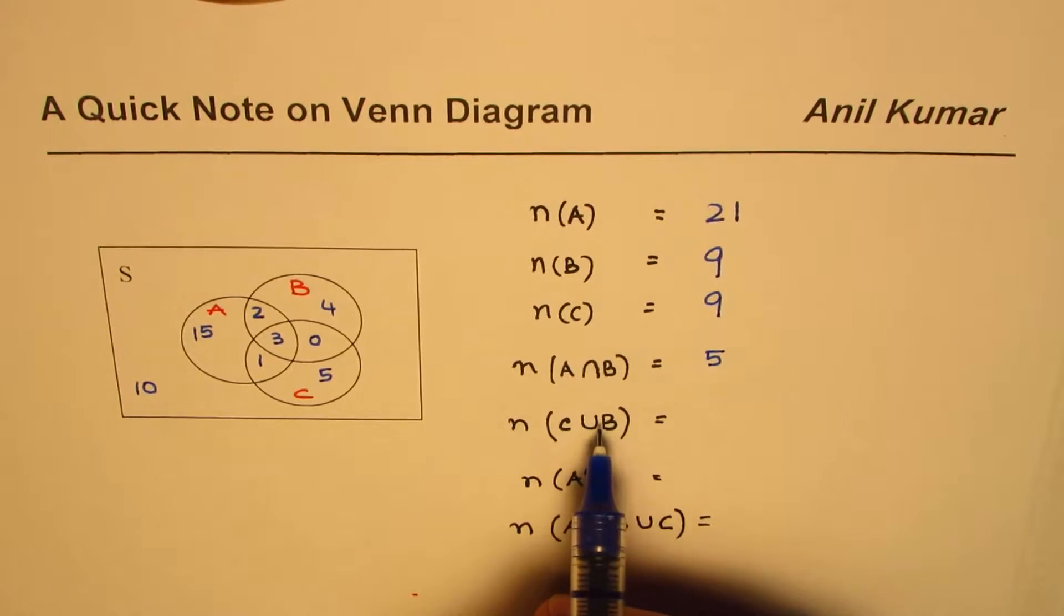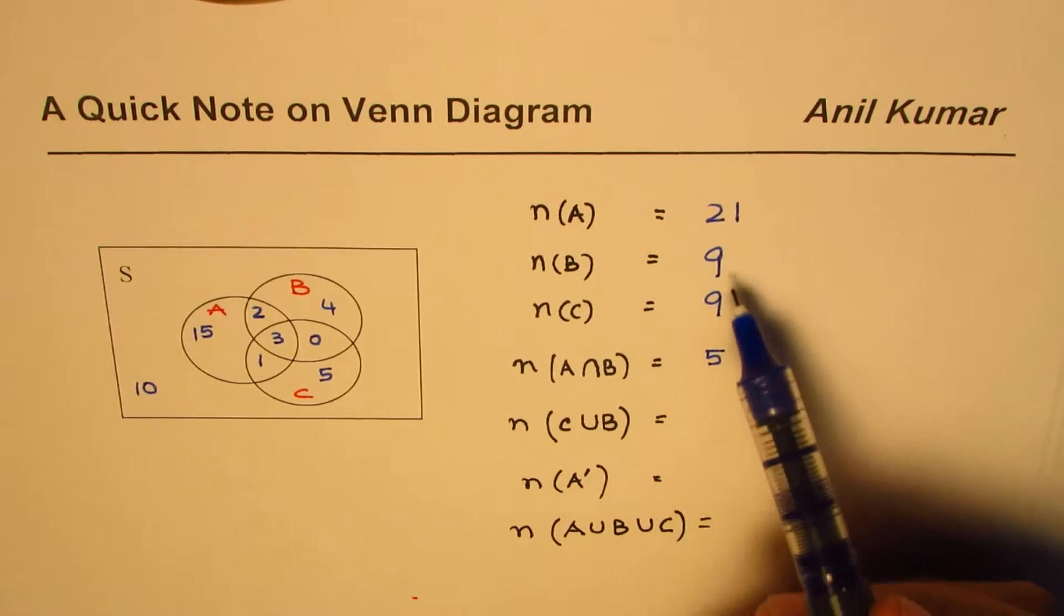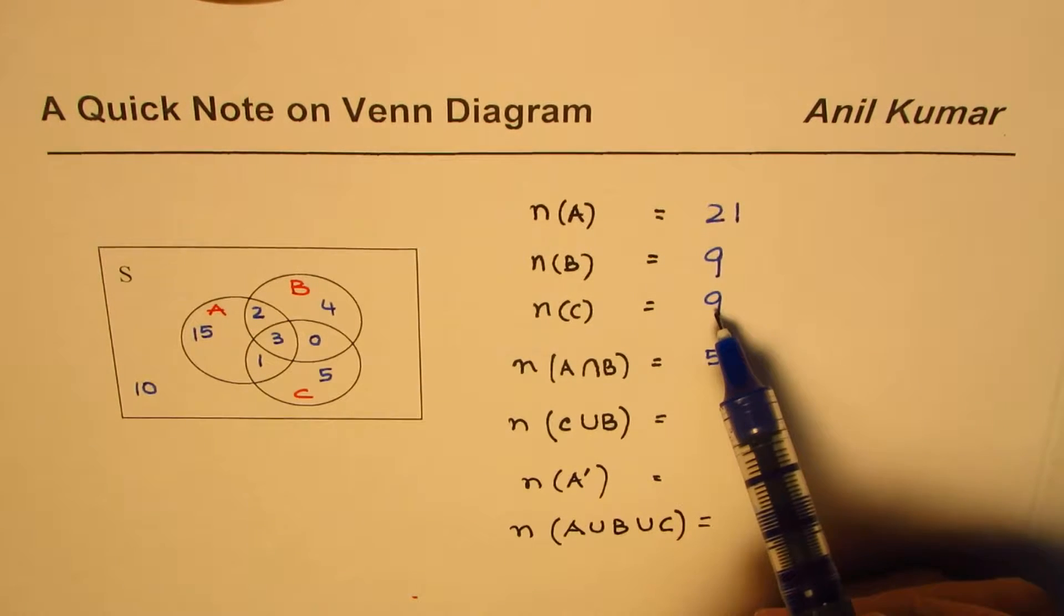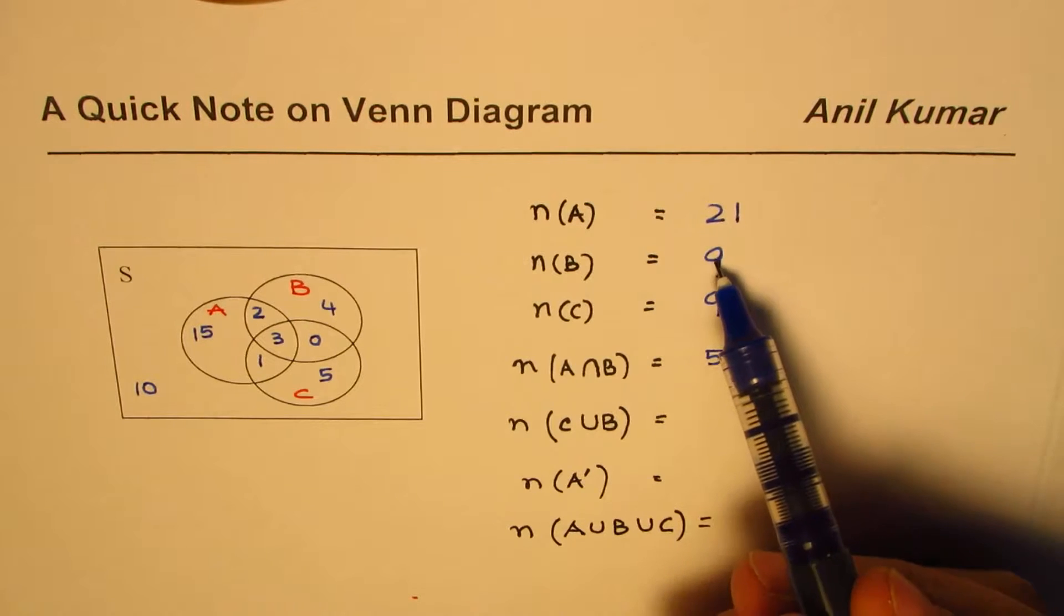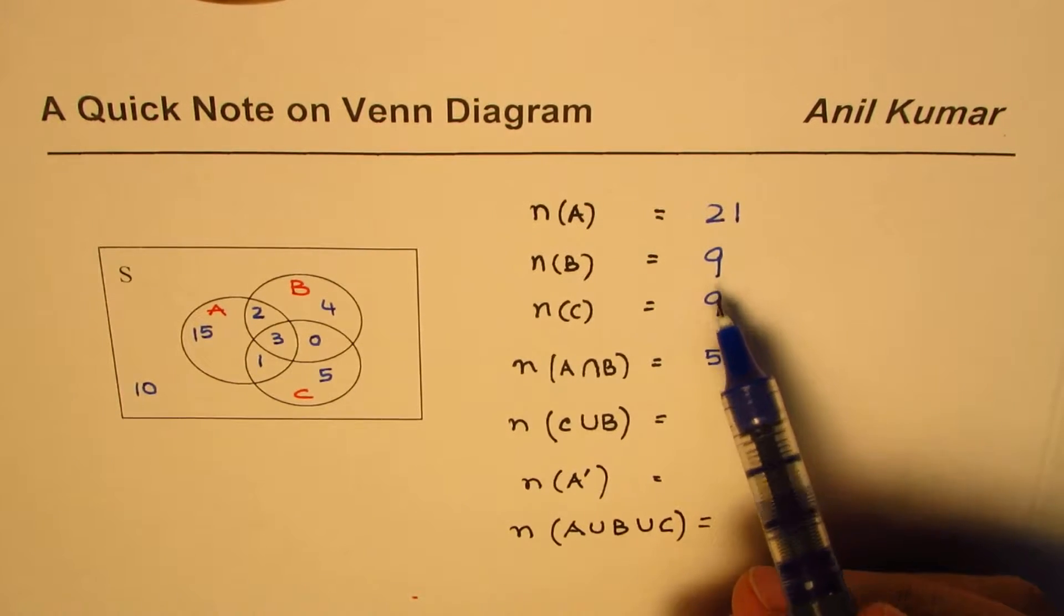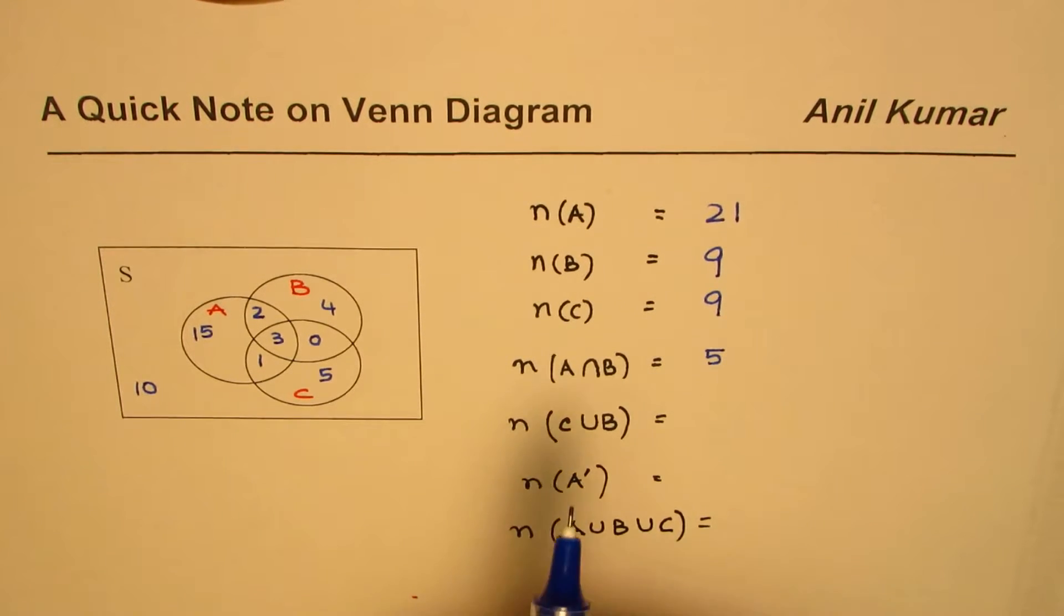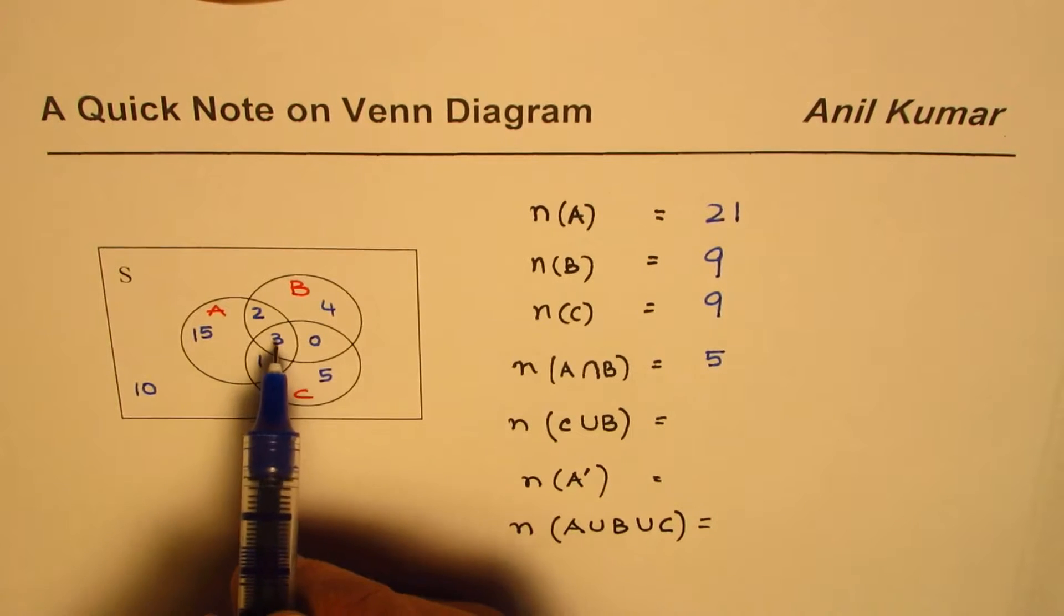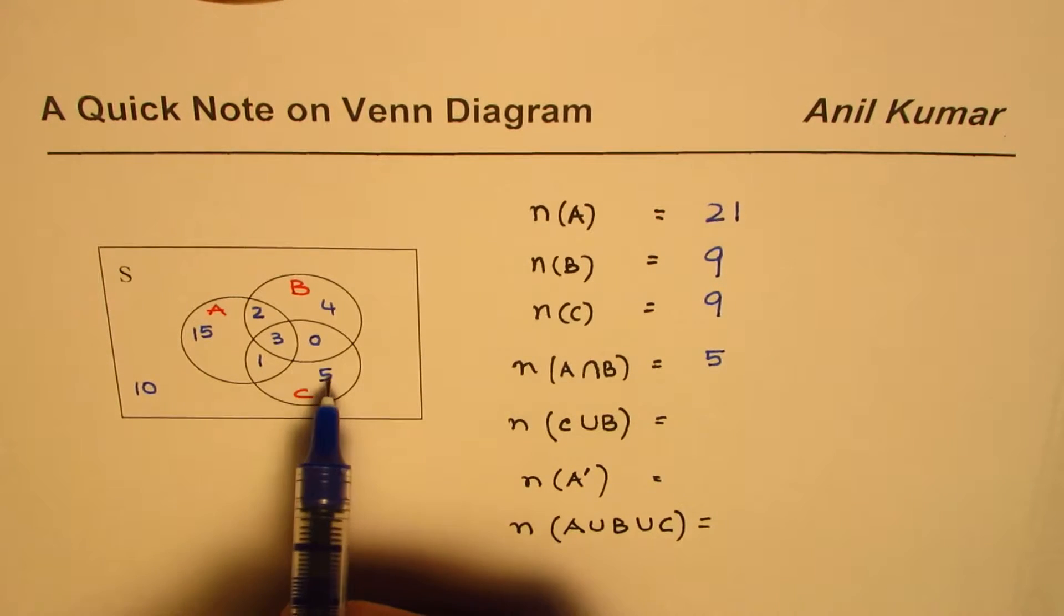C union B: union means you have to add them up, right? So some of you could add this up, but that would be a wrong answer since there are common elements, and those common elements are shown here.